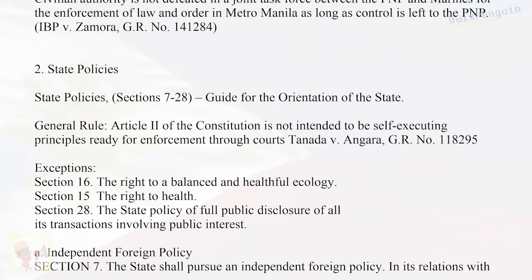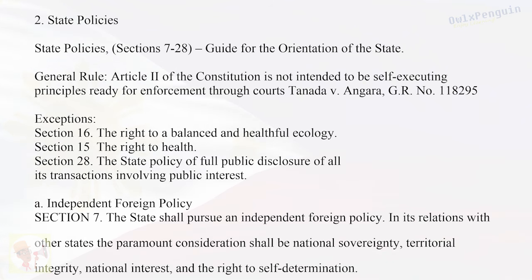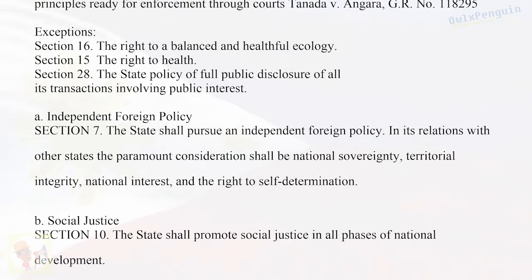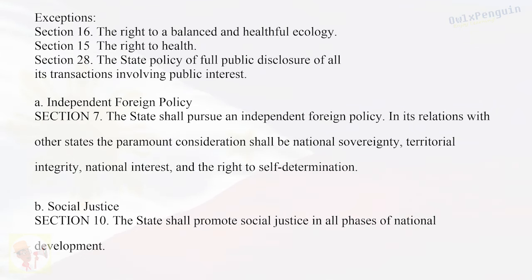State Policies, Sections 7–28: Guide for the orientation of the state. General Rule: Article 2 of the Constitution is not intended to be self-executing principles ready for enforcement through courts. (Tanada v. Angara, GR No. 118295) Exceptions: Section 16 — the right to a balanced and healthful ecology; Section 15 — the right to health; Section 28 — the state policy of full public disclosure of all its transactions involving public interest. A. Independent Foreign Policy — Section 7: The state shall pursue an independent foreign policy. The paramount consideration shall be national sovereignty, territorial integrity, national interest, and the right to self-determination.